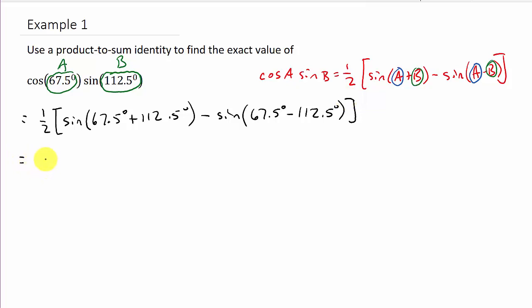And so that's going to give us one half times the sine, and then this would be 180 minus the sine, and this would be negative 45.